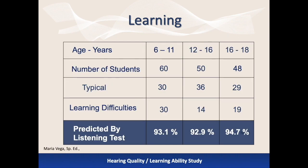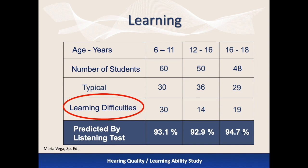Without any knowledge of the student's academic performance, the researcher was able to identify the students either as those who were typical learners or those who were experiencing learning difficulties. Student learning was highly predictable based on the quality of their hearing.